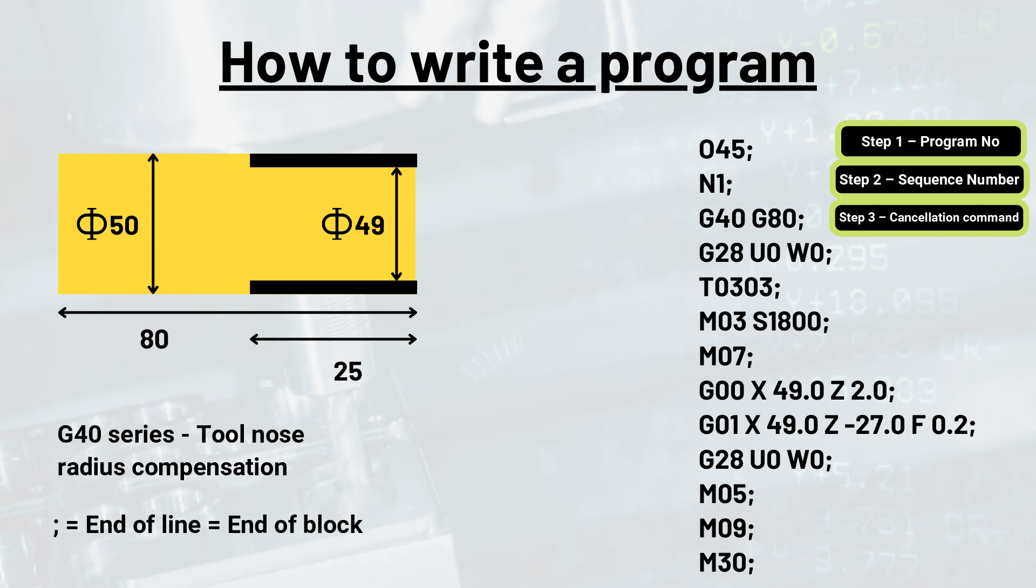The semicolon here is provided at the end of every line of program to end it right there. It is called end of block command.